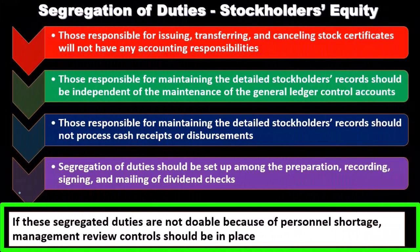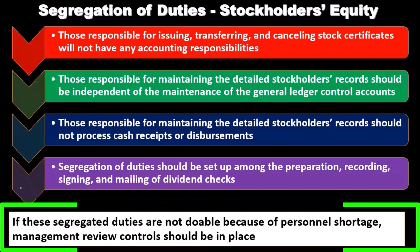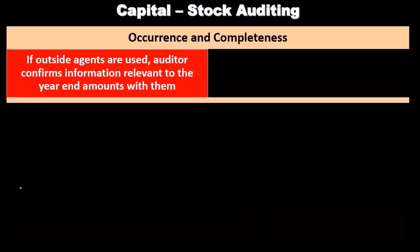If these segregation of duties are not doable because of personnel shortages — in other words, if we don't have enough personnel to perform these separations — then management review controls should be in place as a type of compensating control, especially if these segregations are too many for that particular organization to handle.